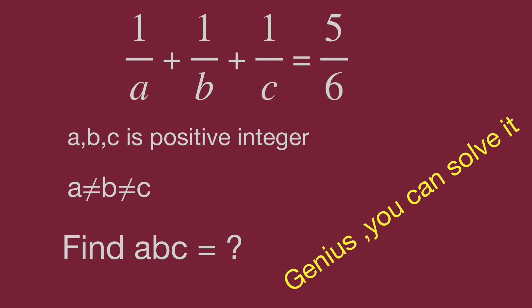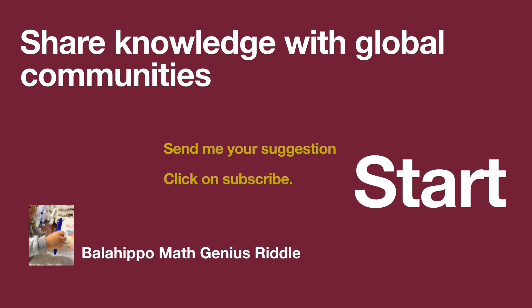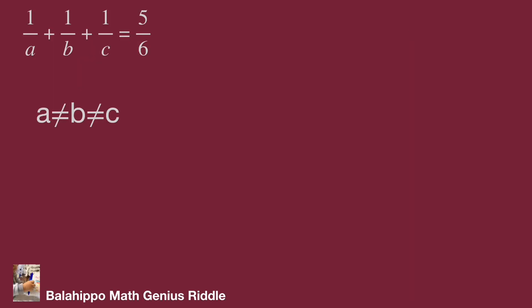Can you find it? Pause the video and get the answer while you are ready. Keep watching the video to get the result. The given equation 1 over A plus 1 over B plus 1 over C equals 5 over 6 — this information is not enough to get the value of A, B, C.